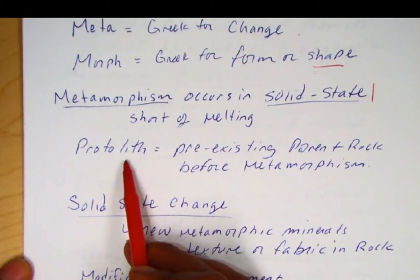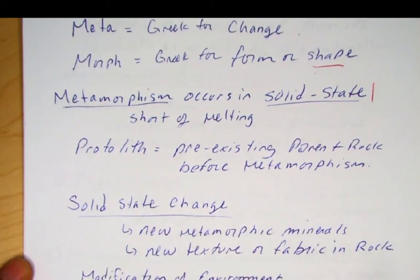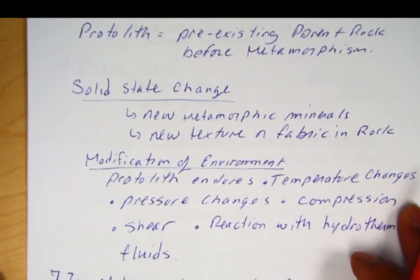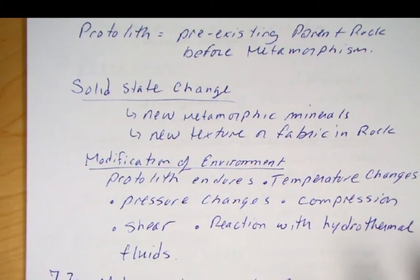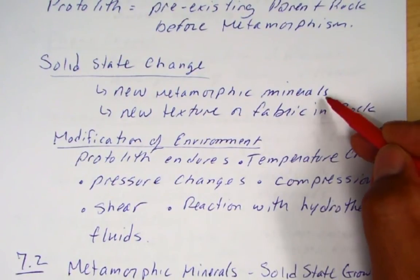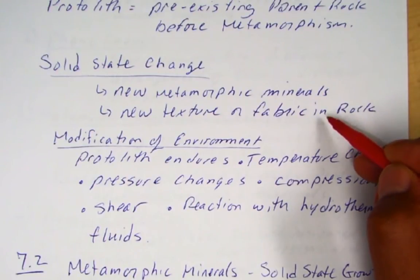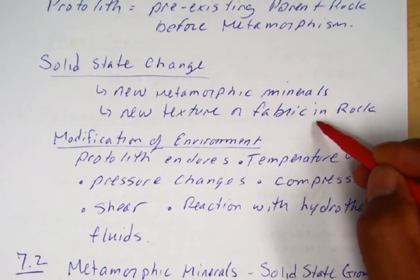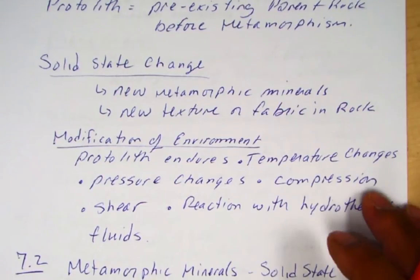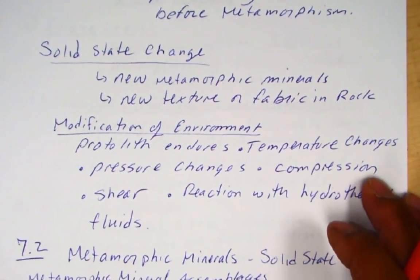The protolith is the rock before metamorphism. Emphasizing this solid-state change, we're either going to grow new metamorphic minerals — we often call that neocrystallization — or we're going to have a texture or fabric develop. These things occur short of melting, at lower temperatures than those required to produce magmas.